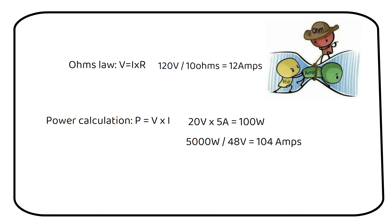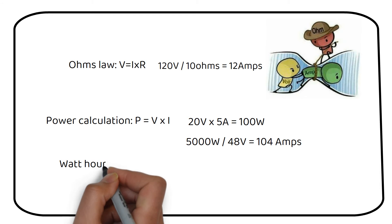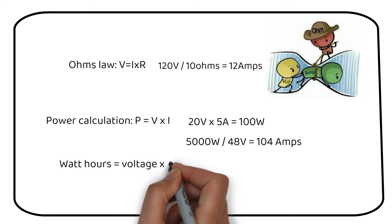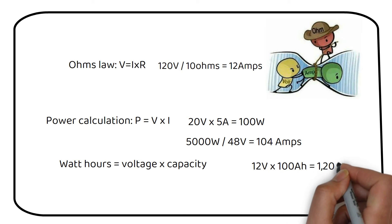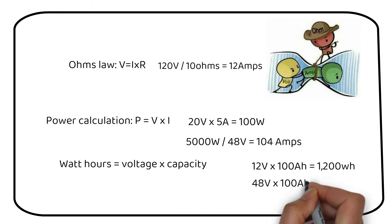To find out the stored energy in a battery, use the following formula. Watt-hours equals battery voltage times battery capacity. A 12 volt 100 amp-hour battery can store a total of 1200 watt-hours. Or a 48 volt 100 amp-hour battery can store 4800 watt-hours. If you have an 1800 watt-hour 12 volt battery, then the capacity of the battery is 150 amp-hours.